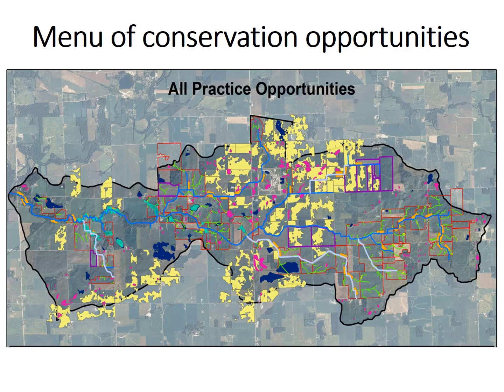I've shown you examples of six different types of conservation practices. Combining the output from a number of ACPF tools provides not a planning prescription but a unique menu of opportunities that can be evaluated and vetted at the local level. Think of this as a buffet — there are many opportunities to expand one's taste for conservation, but no one is forced to try everything that's on offer. As you can see on this map, essentially every field in this watershed has some unique opportunities to contribute to better watershed health.